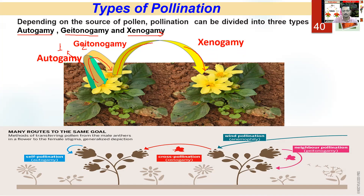Variation will be very less in the first type. Two variations will be there because of gamete formation as a result of meiosis. Geitonogamy — it feels like there are two sources, but the source is the same plant. So transfer is happening, cross-pollination appears to be happening, but functionally and genetically, this is like autogamy. Then comes xenogamy, the most advantageous of the three.